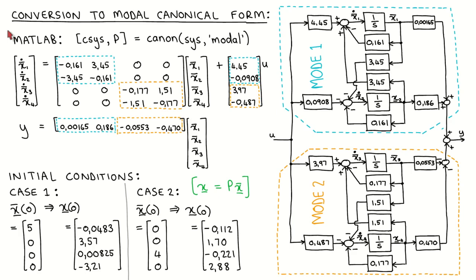In practice, you would not convert a state variable system by hand. You would rather use numerical software. For example, in MATLAB you could use the canon command with the argument modal to convert a linear time-invariant system to a modal canonical state variable system. The transformation matrix p, which transforms the states of the modal form back to the original system description, is also returned by the canon function. After transforming, we get state variable equations where x-bar are the states in modal form.